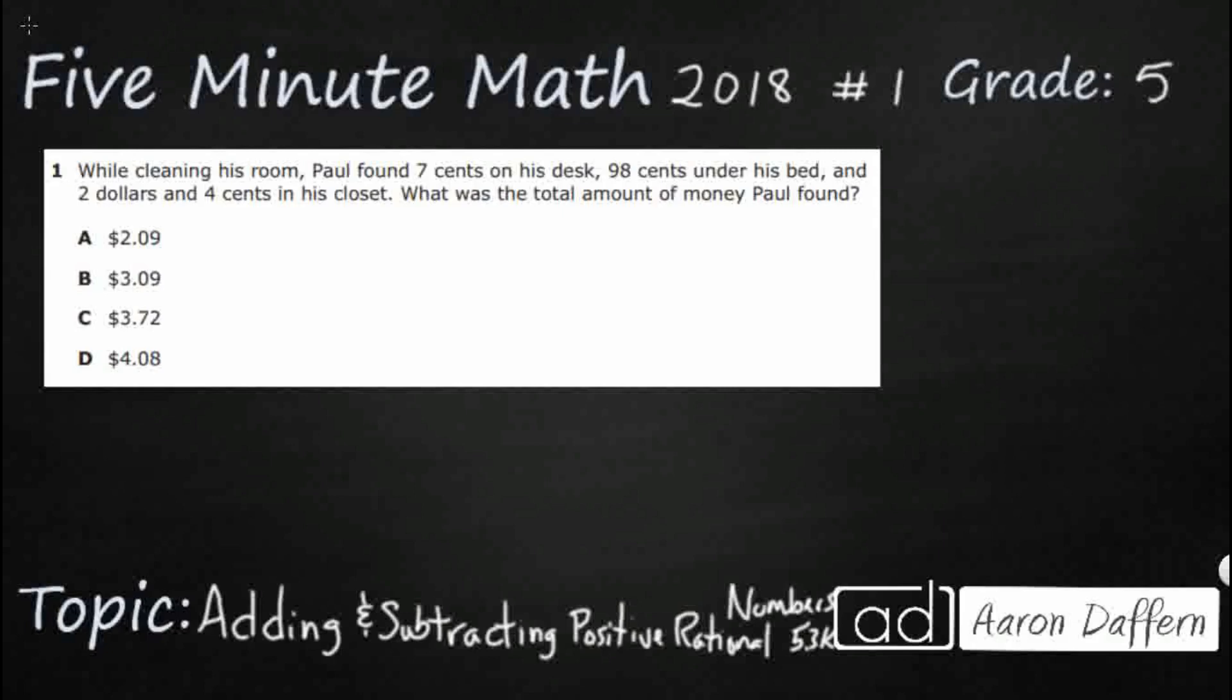If you have not done so already, please go ahead and take a moment to pause the video, work this problem out on your own, unpause it, and then we will look at our answers together. So Paul is finding some money. He's got 7 cents on his desk, 98 cents under his bed, 2 dollars and 4 cents in his closet. So we just need the total amount.